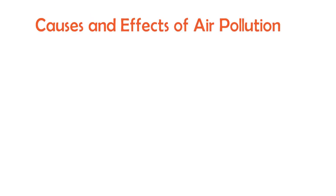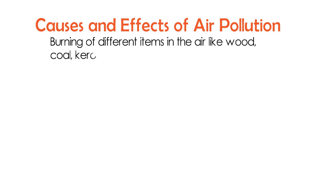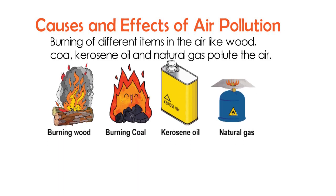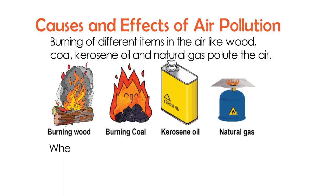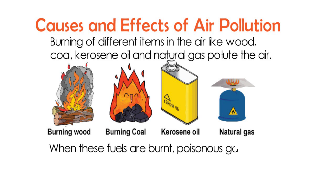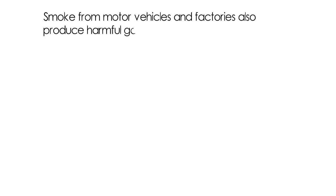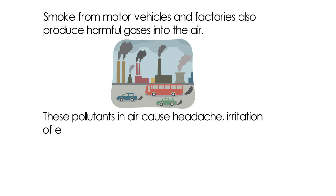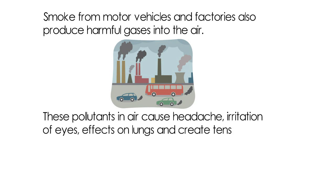Causes and effects of air pollution: burning of different items like wood, coal, kerosene, oil, and natural gas pollute the air. When these fuels are burnt, poisonous gases are produced. Smoke from motor vehicles and factories also produces harmful gases into the air. These pollutants in air cause headache, irritation of eyes, effects on lungs, and create tension.